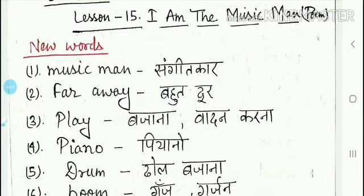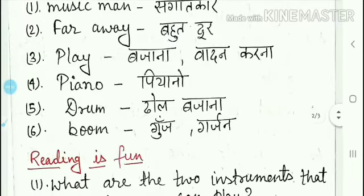Next word is 'piano' — piano ka matlab hota piano. Then 'drum' — drum ka matlab hota dhol bajana (means to beat a drum). Then 'boom' — boom ka matlab hota goonj ya fir garjan (means a loud sound or thunder).